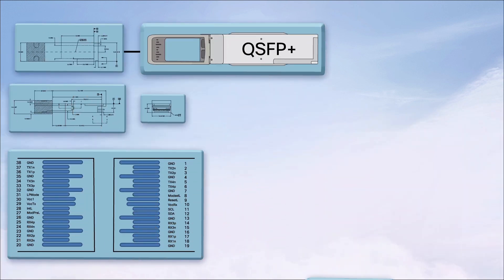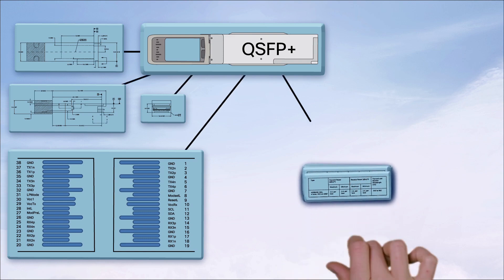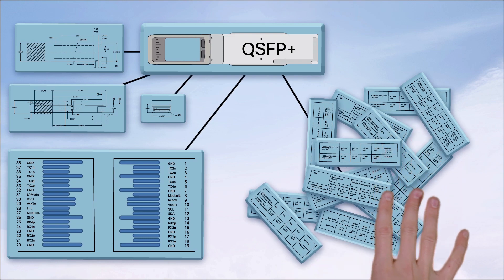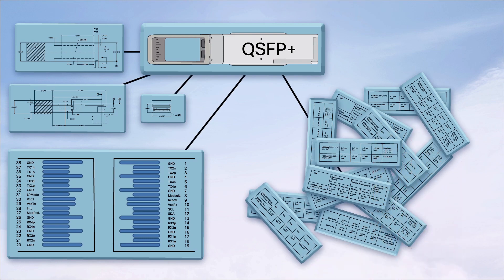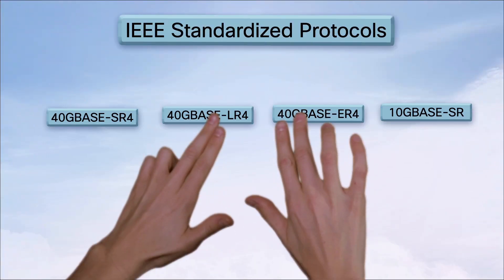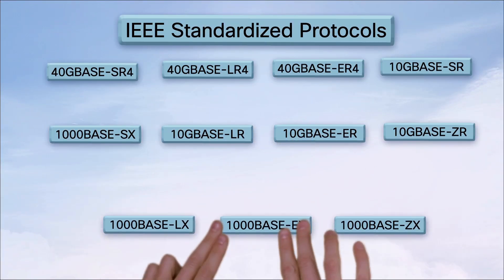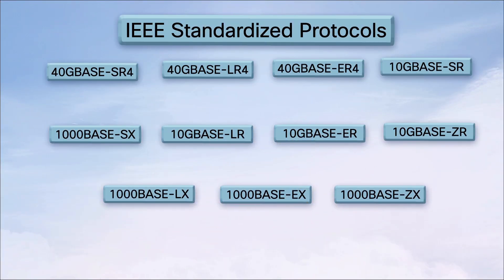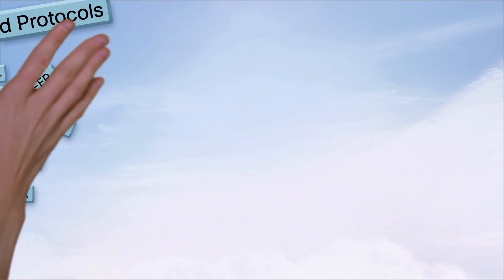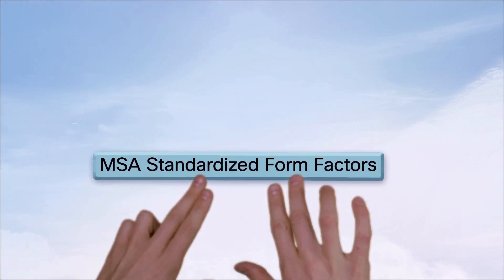Optical interfaces, electrical signals, and mechanical form factor are all defined by standards bodies. Optical interfaces are usually defined by the IEEE, which includes things like optical power budgets, encoding schemes, wavelengths, and fiber type. Electrical interfaces with the ports are also usually defined by the IEEE, which includes things like timing jitter and signal amplitude.